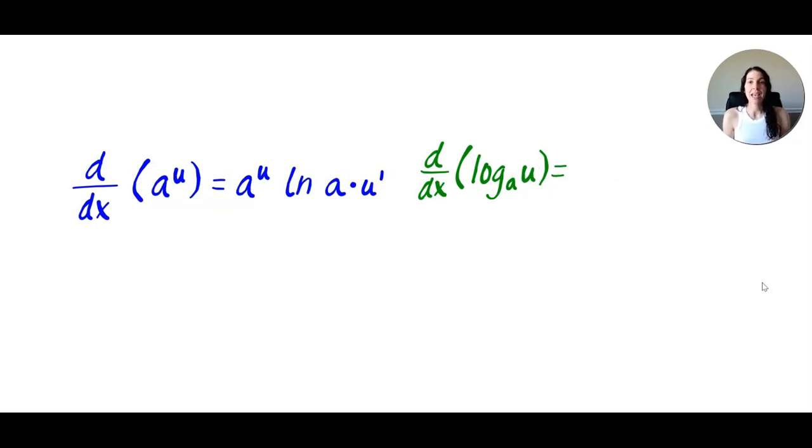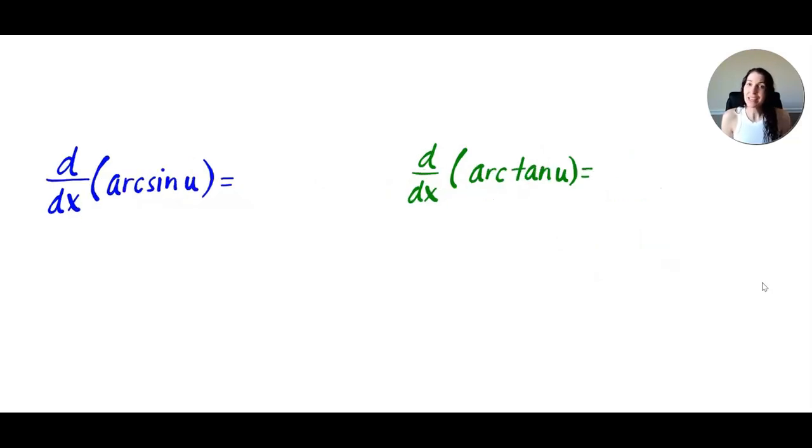And the derivative of log base a of u is 1 over u times the natural log of a. And then make sure to multiply by that u prime. And remember, you can put that u prime in the numerator to have u prime over u times natural log of a. So just don't forget these chain rules.